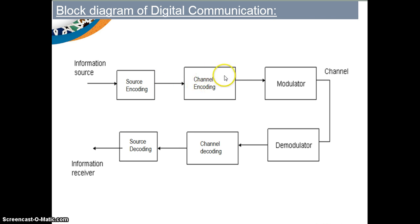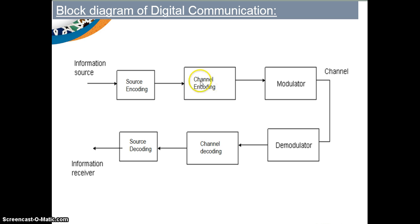Next is channel encoding. Channel encoding is done to minimize the effect of channel noise, so that the number of errors in the received data is reduced and the system becomes more reliable. When information passes through the channel there is a chance it will be affected by different types of noise and errors. Channel encoding provides protection against that by adding extra bits, or tail bits, to the source encoder signal using different encoding techniques. We will study error control coding, including different channel encoding and decoding techniques, in detail in Unit 4.